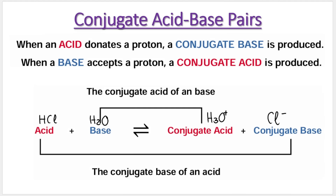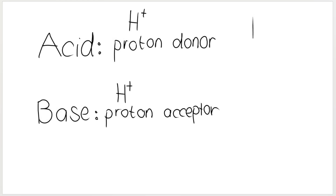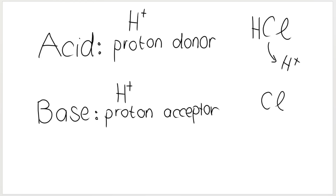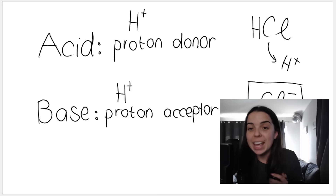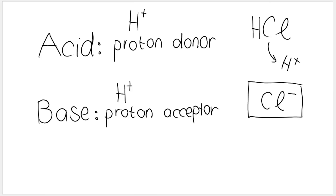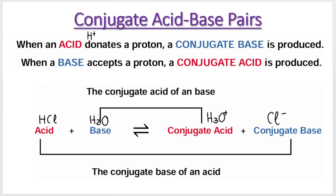So what is a conjugate acid and a conjugate base? When an acid donates a proton — when it gives away an H plus — what is left over from that acid is what we call a conjugate base. For example, HCl, hydrochloric acid, is a strong acid. If that acid gives away its proton, it gives away an H plus, what is left over? The H will be gone and it will form Cl minus. This Cl minus is what we call its conjugate base. So an acid forms a conjugate base, and a base forms a conjugate acid. We can pair these up to form our conjugate acid-base pairs.